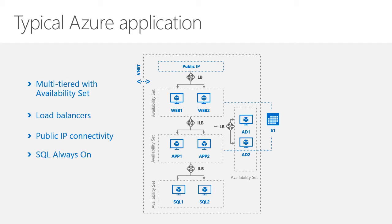The examples we've seen feature a three-tier web application — a web tier, application tier, and database tier — running on virtual machines. Internally, you have internal load balancers (ILB) that balance the load and detect whether servers are available. They do two things: check whether web server one or two is available, and perform round-robin or other load balancing algorithms to ensure you balance the load between different web, application, or SQL servers.